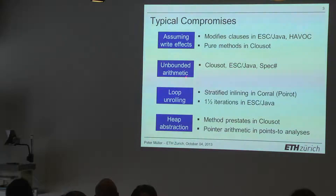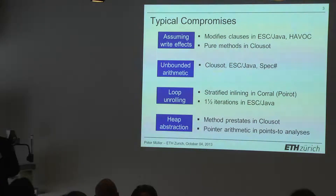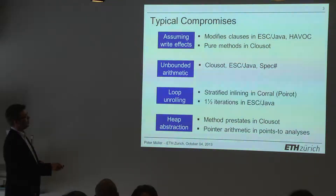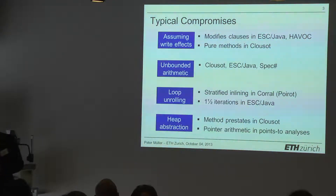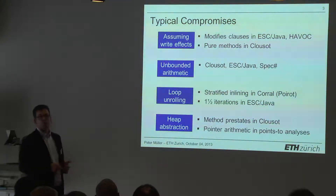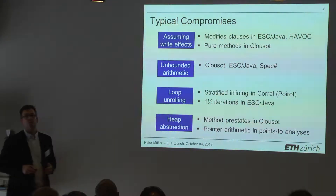Another area is arithmetic. Many tools assume unbounded arithmetic and don't consider overflow — Clouseau is one of them, ESC Java, the Specsharp verifier. There's a long list. A third example is loop unrolling. For instance, Corel, which used to be called Poirot, uses some form of stratified inlining and only analyzes a bounded number of loop iterations. ESC Java decided to analyze only one-and-a-half loop iterations for every loop — you look at one entire iteration, evaluate the guard once more, and then stop.